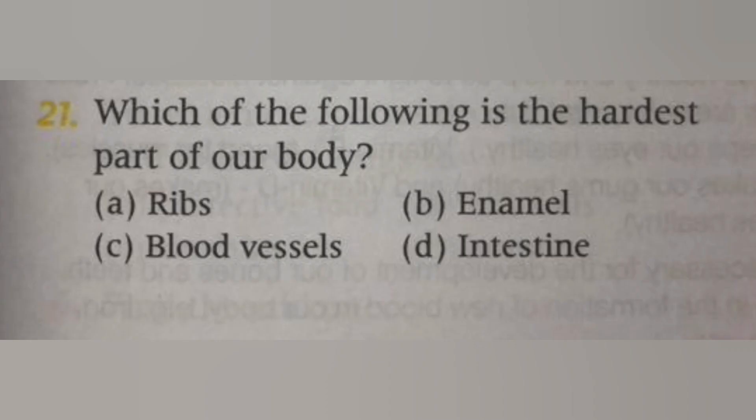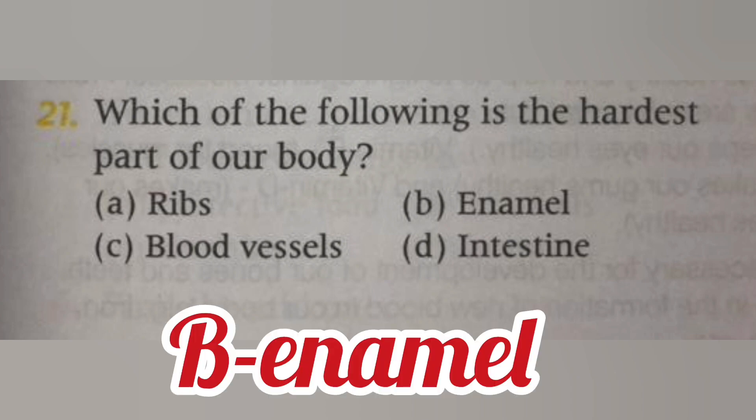Next, which of the following is the hardest part of our body? Options: A. Rib, B. Enamel, C. Blood vessels, D. Intestine. The answer is B, enamel. Enamel is the hardest part of our body — it is harder than bone.